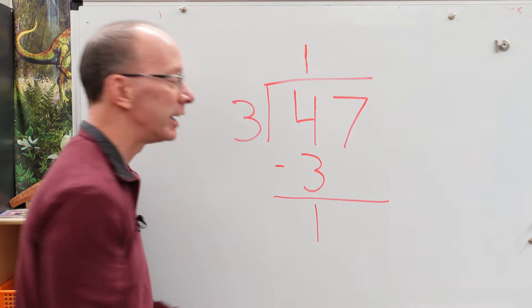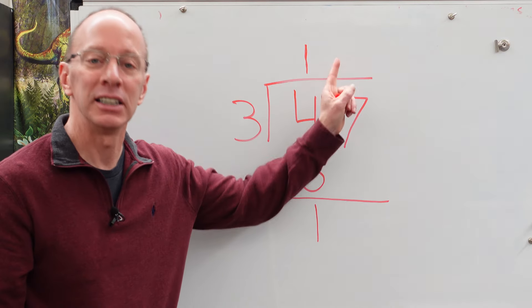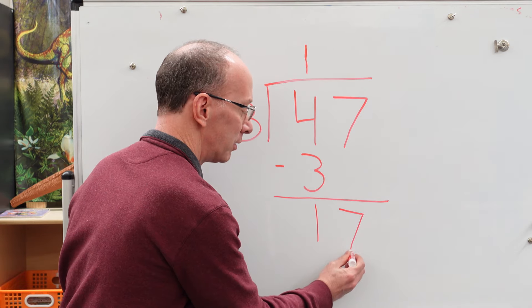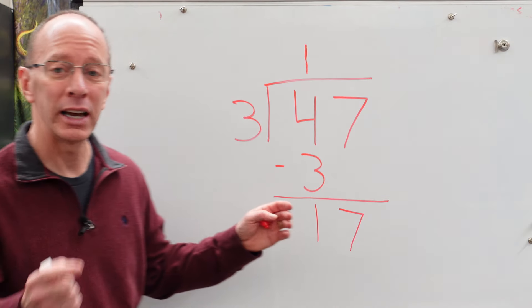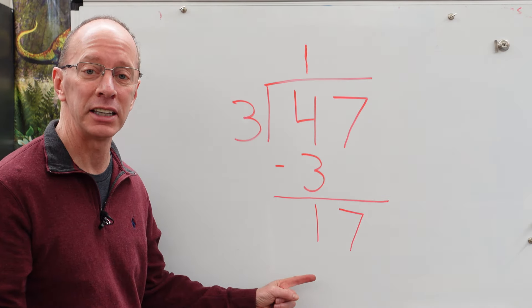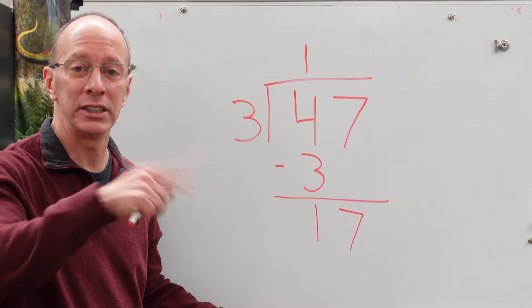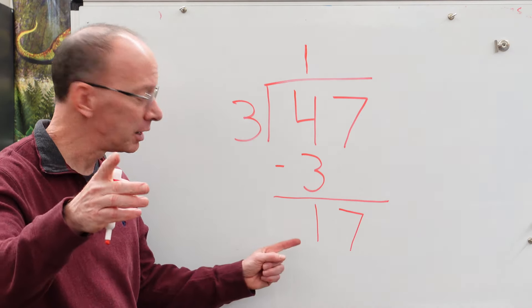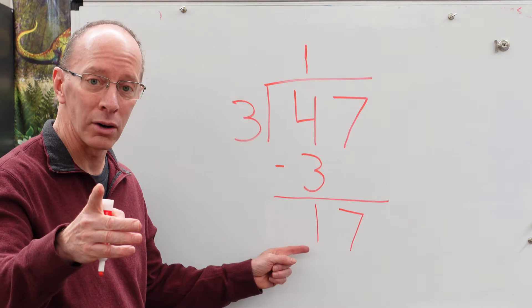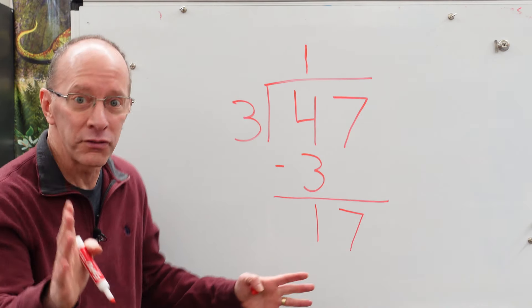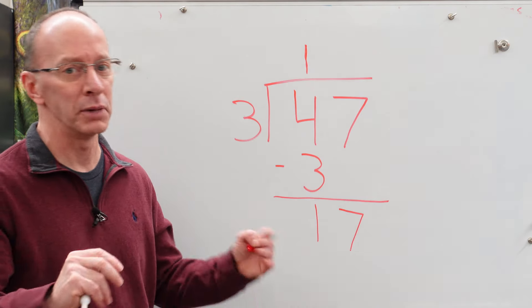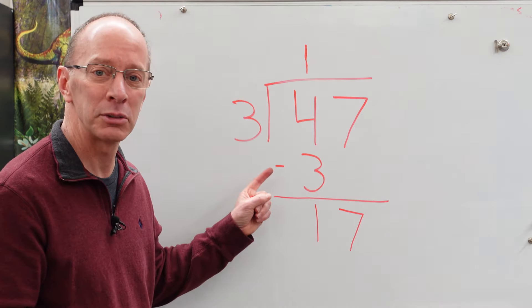And now bring the next number down. Drop it down. So put a seven right there. Now we have to decide how many times can we put three into 17. Three times one is three. Three times two is six. Three times three is nine. Three times four is 12. Three times five is 15. Three times six is 18. Whoa, too much. Back it up. We got to do three times five.